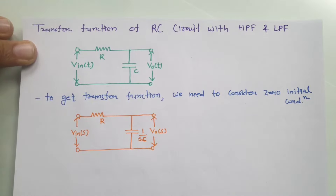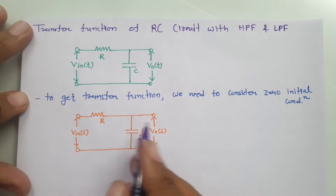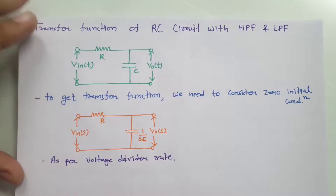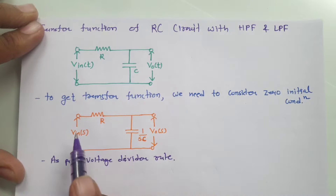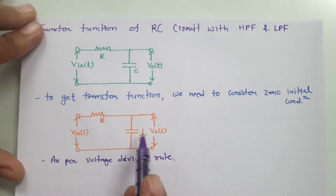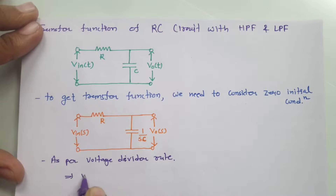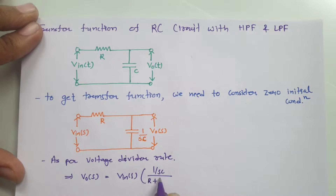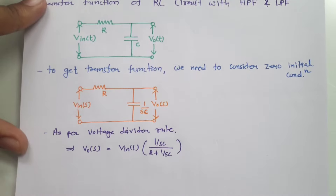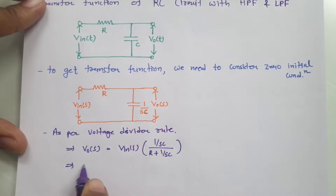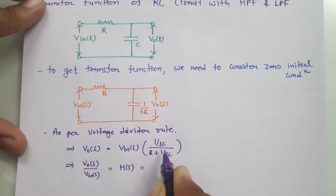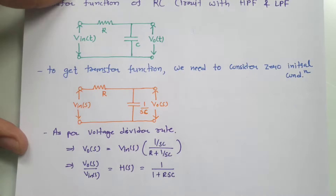Now to find the transfer function, we will be applying the voltage divider rule. Our output V_out(s) equals the input multiplied by this impedance divided by the sum of both impedances. So that is 1/sC divided by R plus 1/sC. Taking the LCM, V_out divided by V_in in the Laplace domain — which is the transfer function — becomes 1 divided by (1 + RSC).